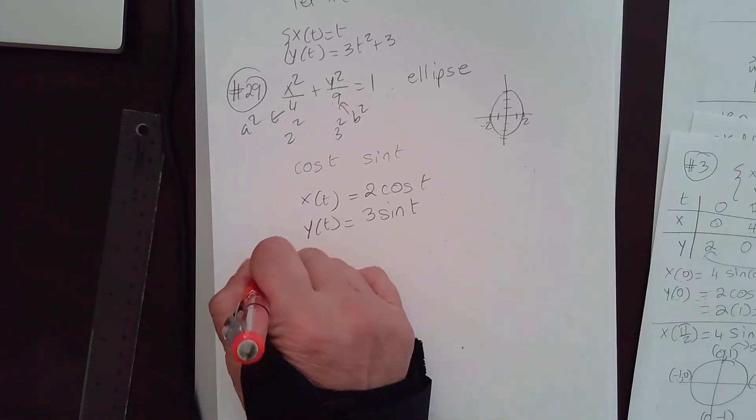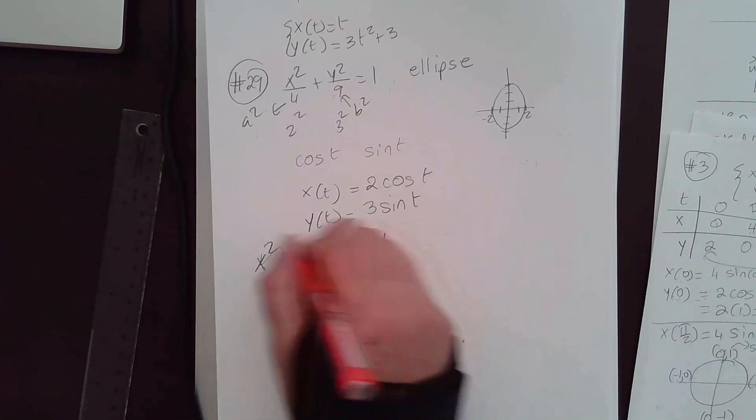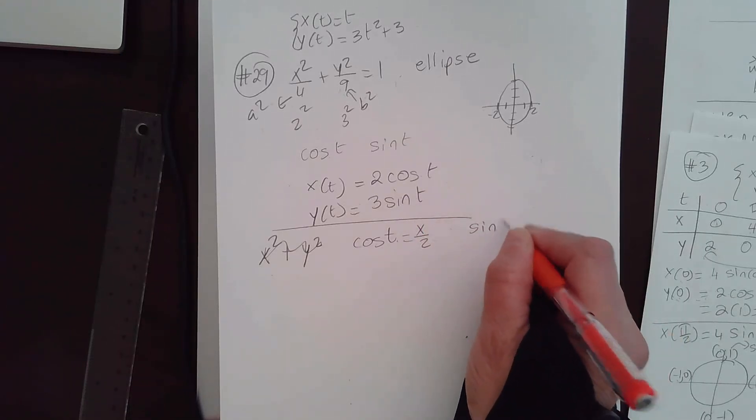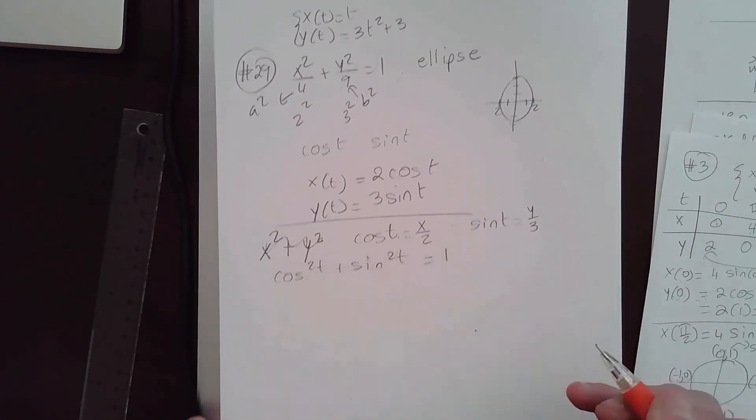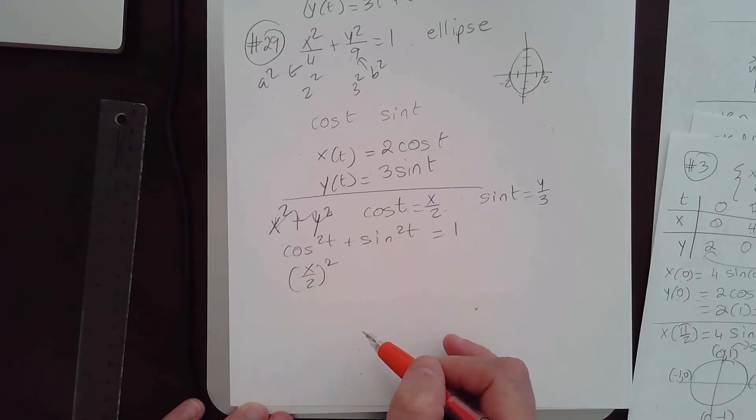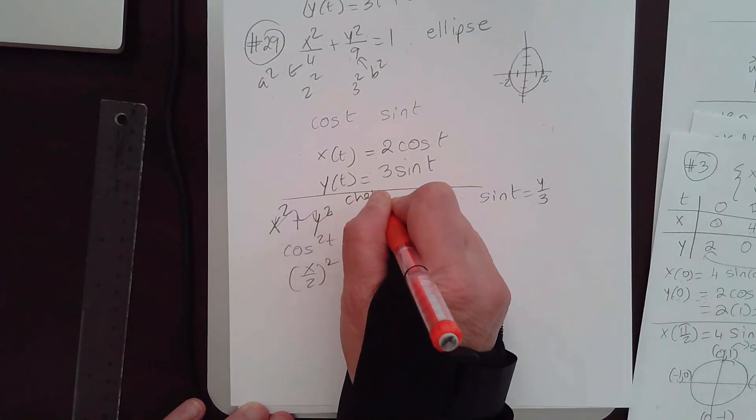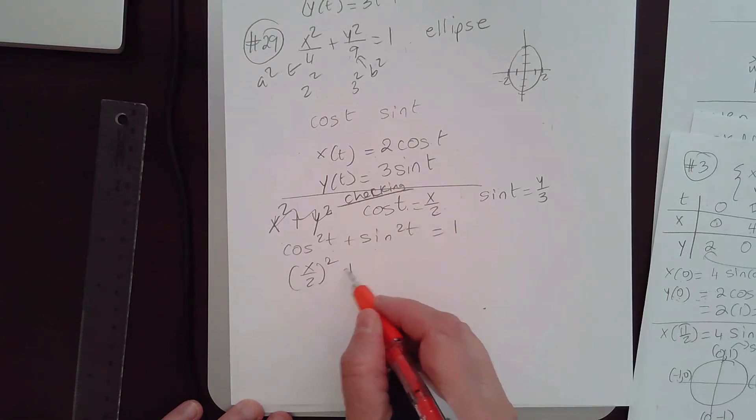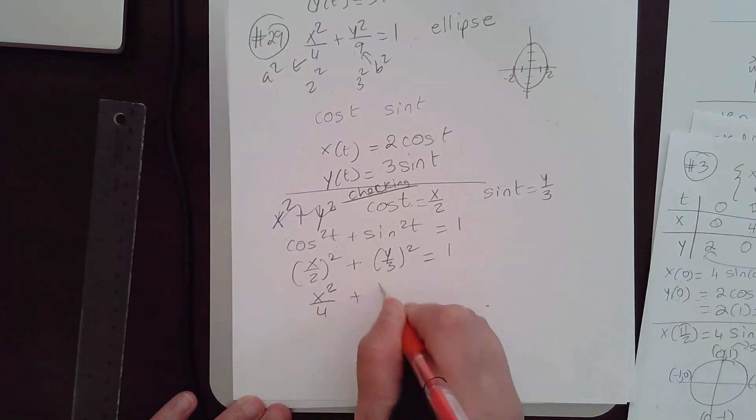Remember, so you can try, x squared plus y squared, what would you get or you can do cosine t is equal to x over 2 isn't it you solve for cosine t from here and you solve sine t in here what does that give you sine t is y over 3 so cosine squared t plus sine squared t is equal to 1 cosine squared t is what x over 2 squared remember we did this part we did when we went from parametric equation to cartesian so here what we're doing we are checking to see if this is correct.